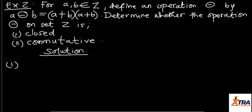So we are going to determine if it's closed and also if it's commutative. Now first of all we are given the operation to be A⊕B as (A+B) times (A+B).